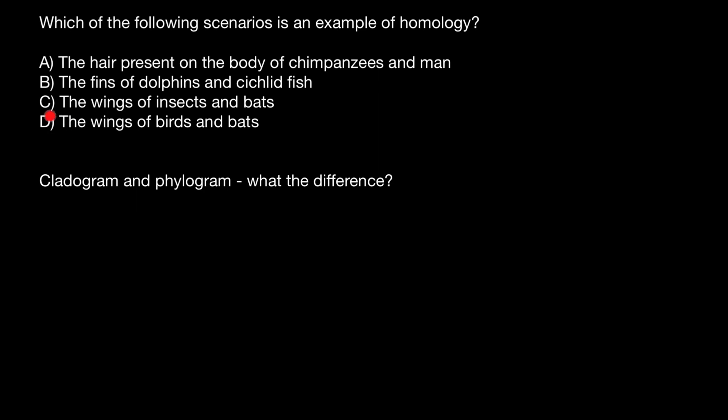So let's analyze, starting from D, the wings of birds and bats. This is going to be an example of homoplasty. Birds and bats do not share recent common ancestors and any similarities in their wings is only due to performing the same functions.